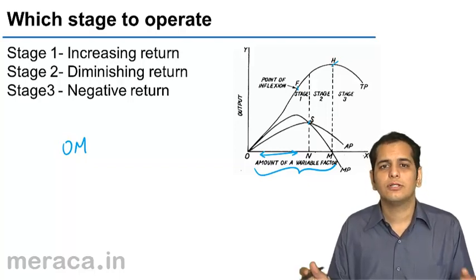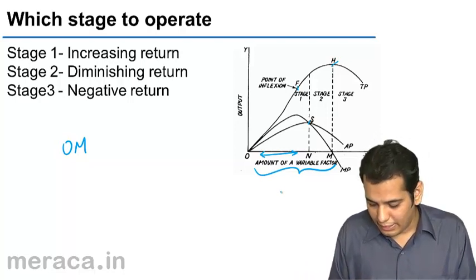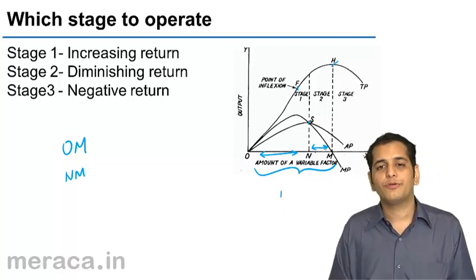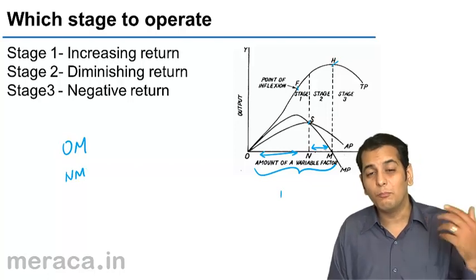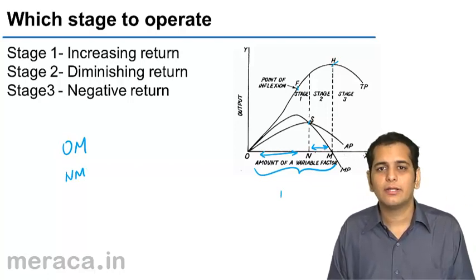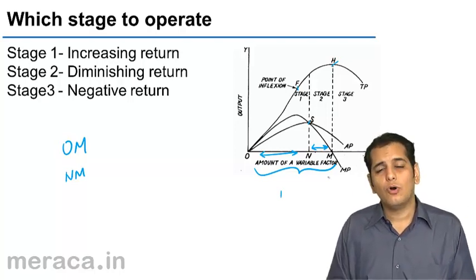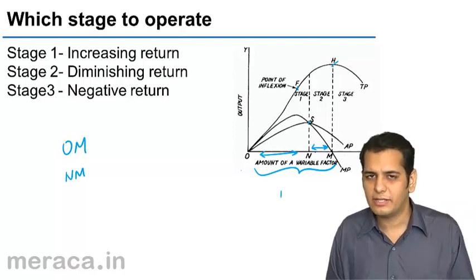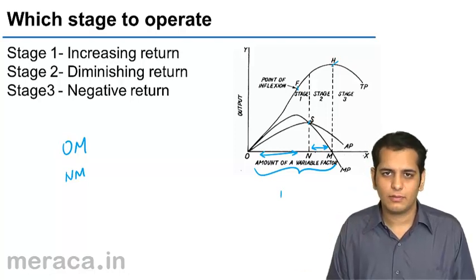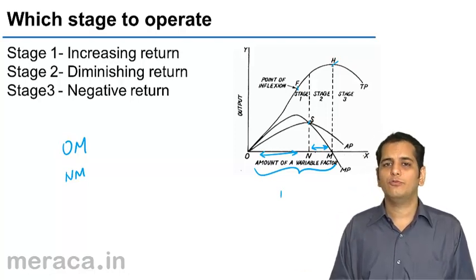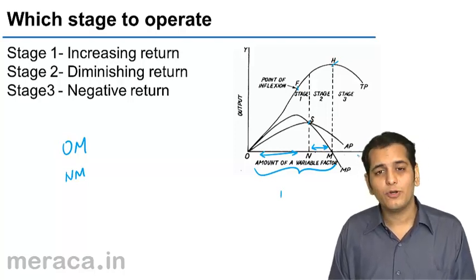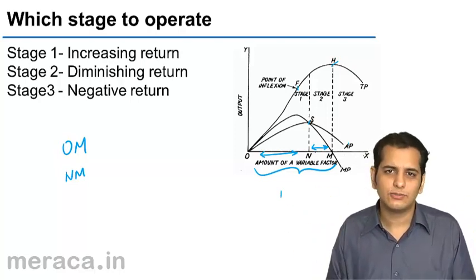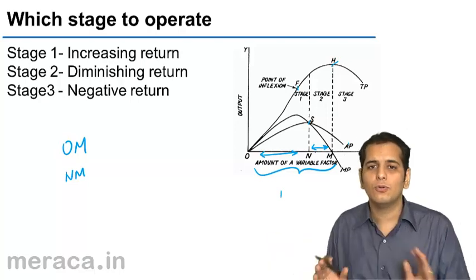If he produces OM units, we can see that NM is the difference that he can profit from. So with more sales and more profit, he can do a better job. A producer would always prefer to be at stage 2. He will like to produce OM number of units, because if he goes beyond OM, his productivity is actually decreasing and his total production is actually decreasing. So he would not like to go beyond OM.